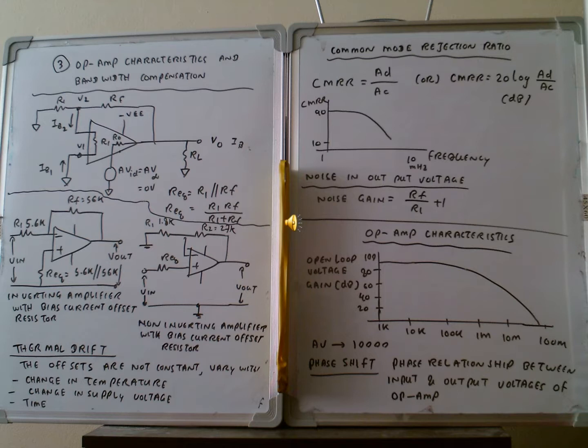R1 and RF form a parallel combination, so R-equivalent equals R1 parallel with RF. This is calculated as 5.6k multiplied by 560k divided by 5.6k plus 560k. This is how we calculate the equivalent resistor for the input, specifically for an inverting amplifier with a bias compensation resistor.